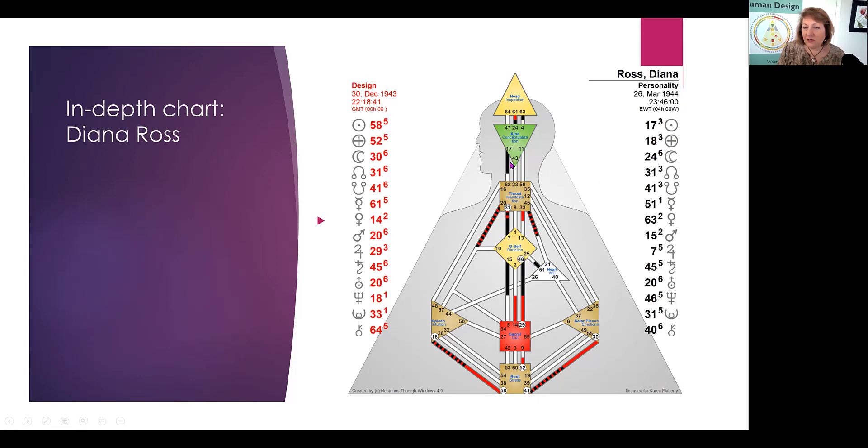And even off the Will Center, she has the Gate 51, which is the Gate of Shock. But she, as you can see, has the Sun in Gate 17 and the Earth in Gate 18. And so she had her opinions. But I think she, but she's also got this 18-58. So she's got the 18 Gate of Corrections, but she's connected to the 58, which is in her unconscious sun. And the 58 is the joy of life. And so she was always willing to change things up so that they would bring people joy.